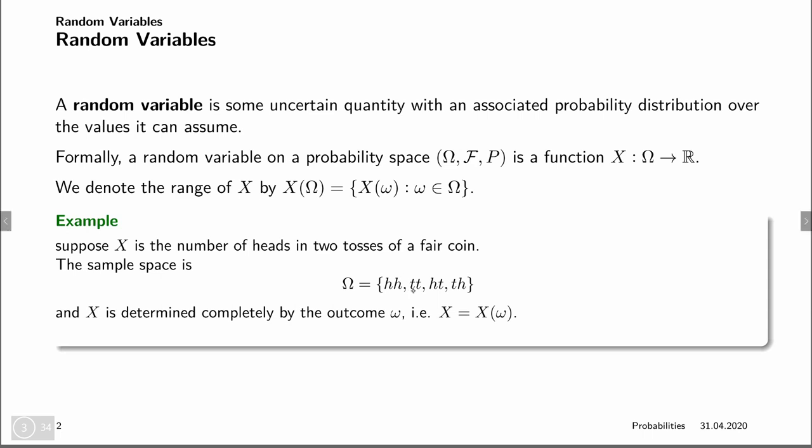Let's look at an example. Suppose x is the number of heads in two tosses of a fair coin. In that case, our random experiment would be to flip a coin twice. Omega would be the set of all series of length two of flipping a coin, so it would be: heads-heads, tails-tails, heads-tails, and tails-heads.